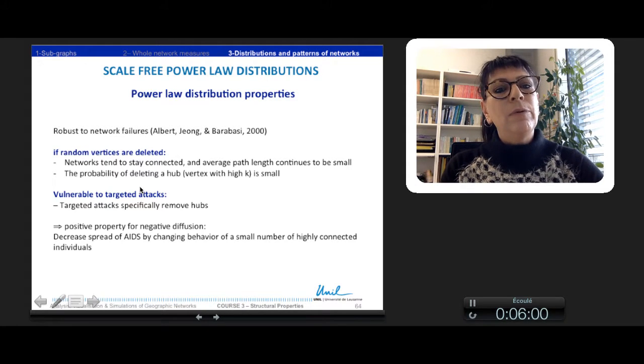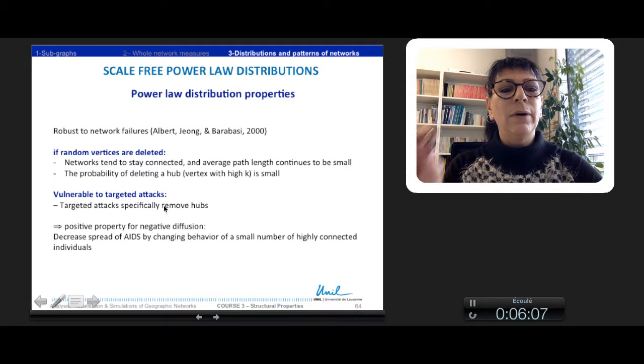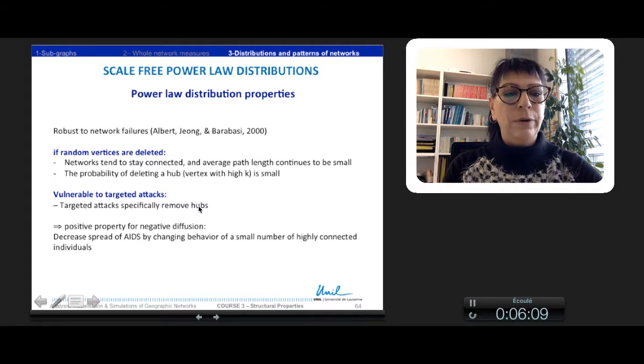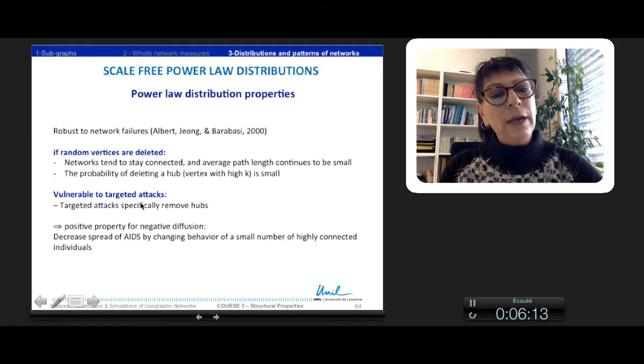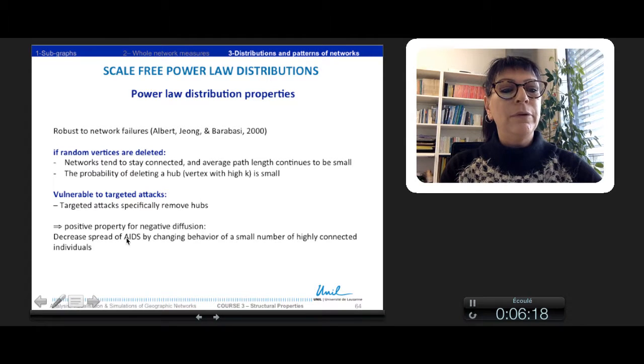This vulnerability is also a positive property for negative distribution. For example, in order to decrease the spread of an epidemic like AIDS, it is easier by changing the behavior of a small number of highly connected individuals.